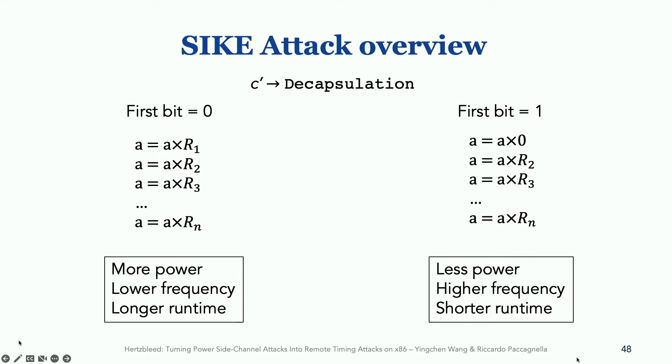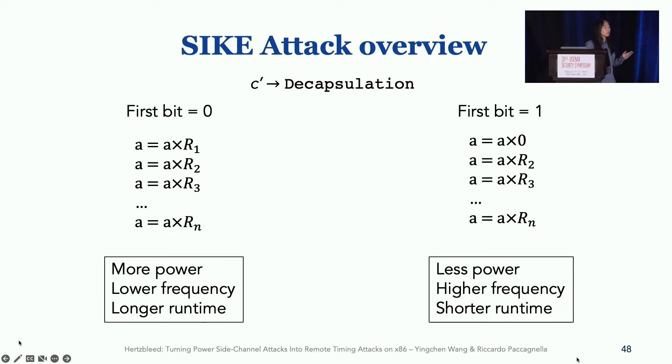Obviously, when first bit equals to zero, the CPU is going to consume more power, runs fast, runs slower, and because of first bit, and the decapsulation algorithm takes longer amount of time. This is how we extract the secret key bit by bit, because such a behavior generalizes to every single bit.